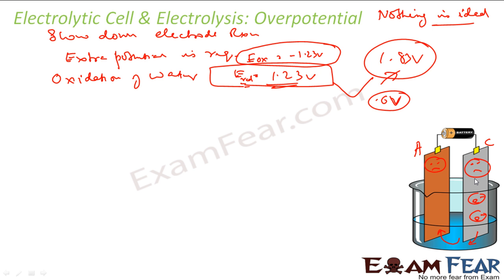In an electrolytic cell, over potential means more energy is required than thermodynamically expected for the reaction to happen. In a galvanic cell, over potential means less energy is generated than expected. For example, the transfer of electrons from water to the anode is a very slow process, so extra potential is necessary to liberate oxygen. Note that over potential depends on the metal used — for platinum, the over potential is less.